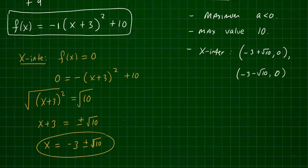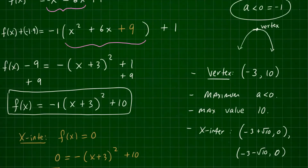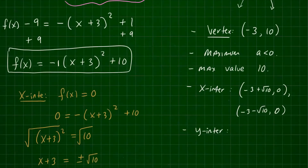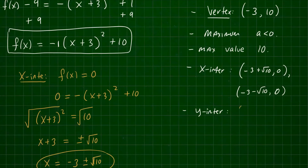For the y-intercept, we set x equal to zero. Substituting zero into either the standard form or the original equation gives one. So the y-intercept is (0, 1).